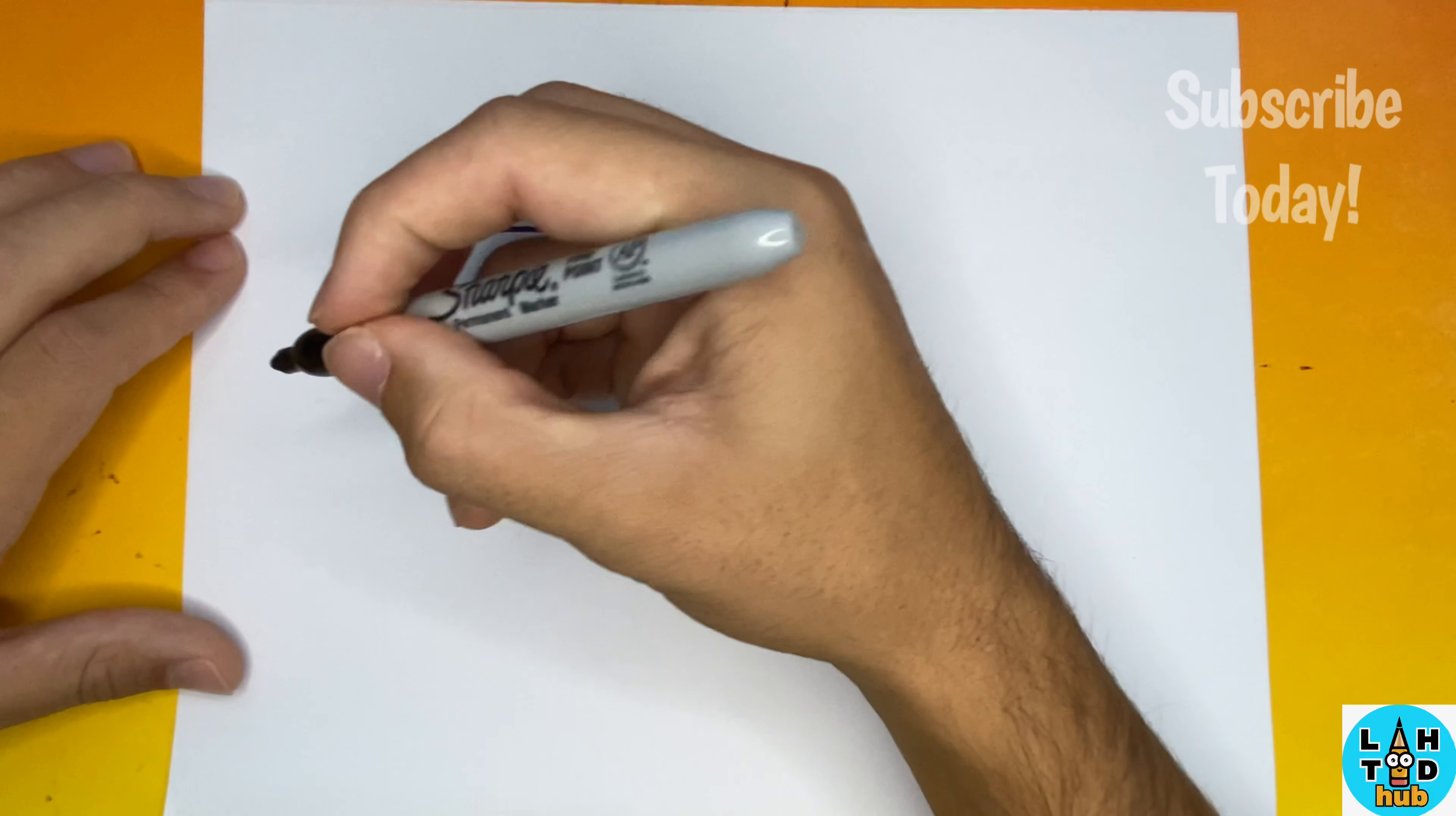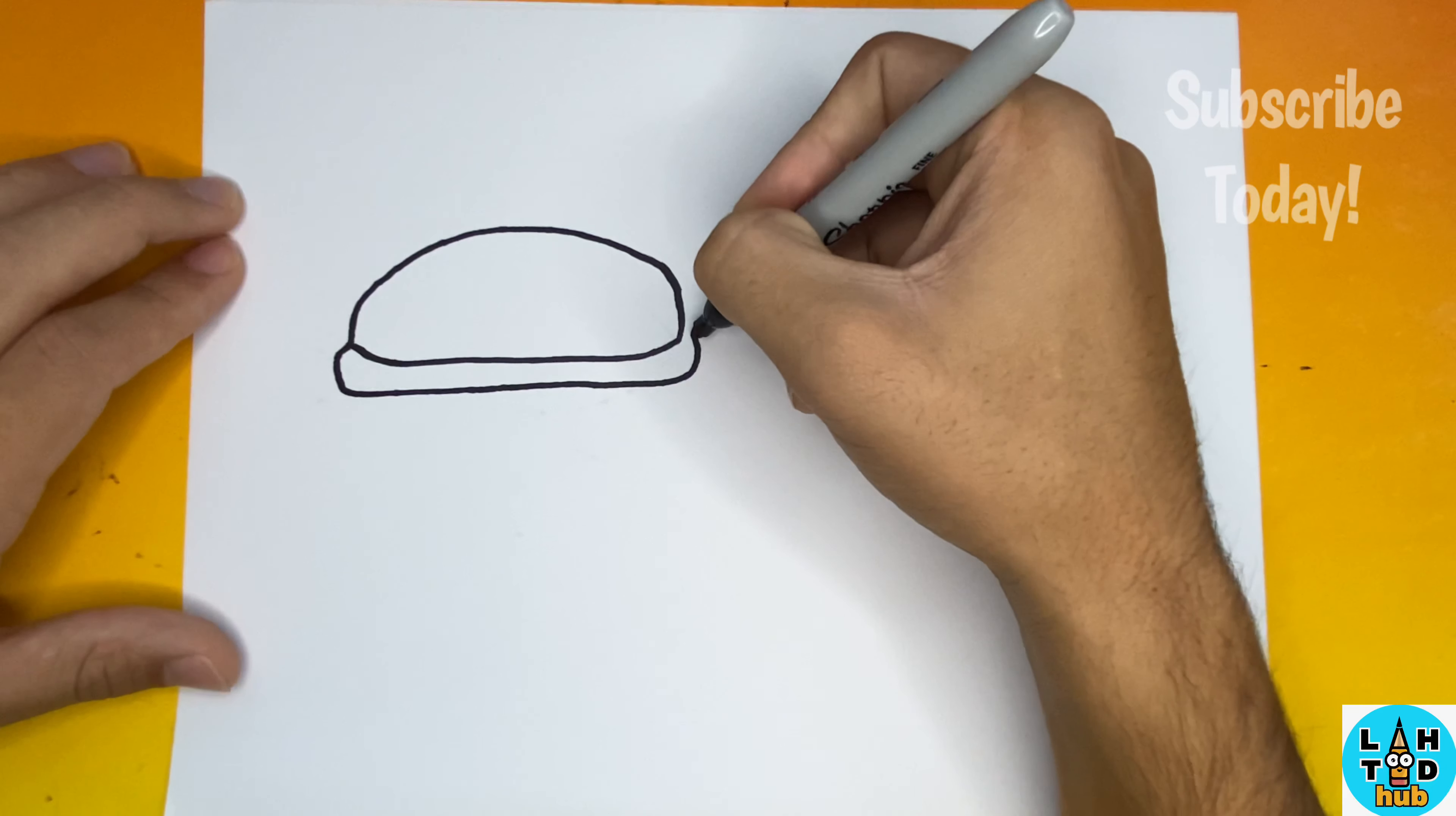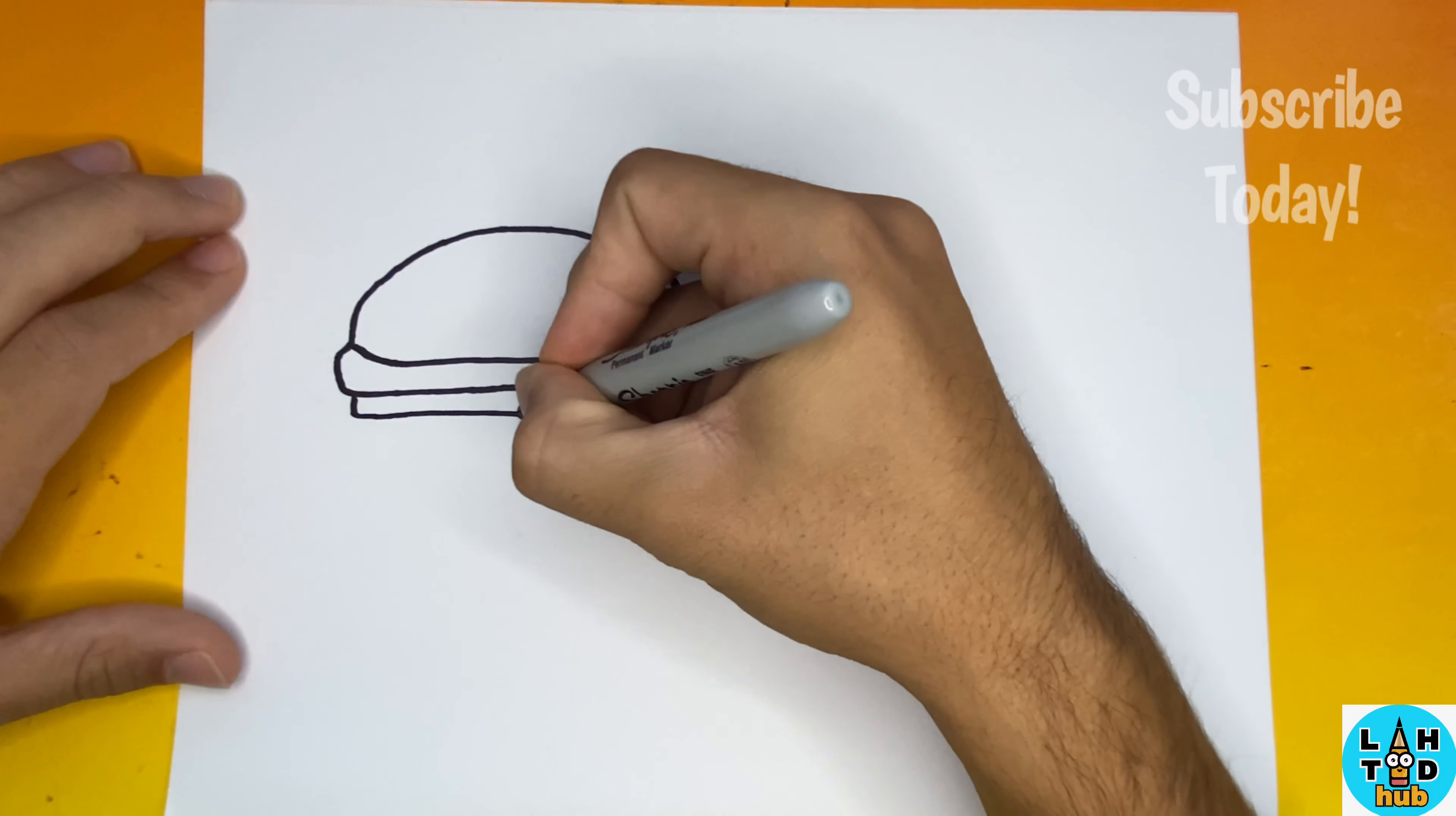Now for our hamburger we're going to make multiple layers. The first layer that we're going to make underneath the bun will be the tomato. Now underneath the tomato that we just made, we're going to add a layer that will be a slice of cheese. The slice of cheese will be similar to a rectangular like shape.